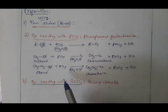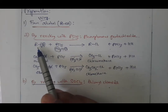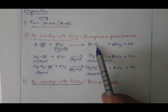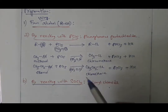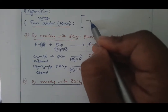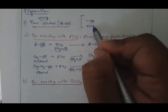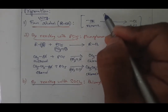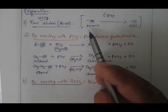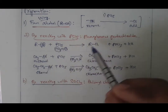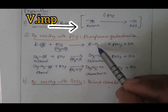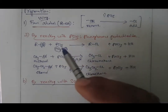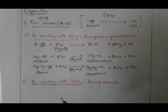If you observe, in both examples R stayed the same but OH was replaced by Cl. The key trick to remember: whenever you want to remove OH from a compound and introduce Cl in its place, you react with PCl5. The byproducts will be HCl and POCl3.